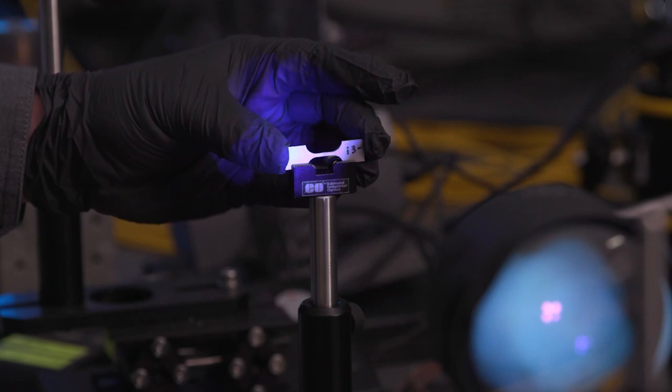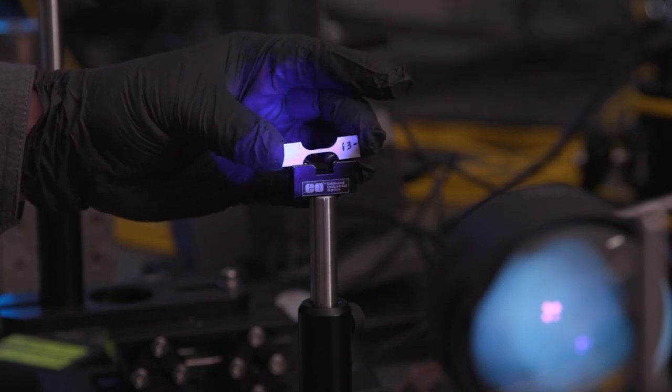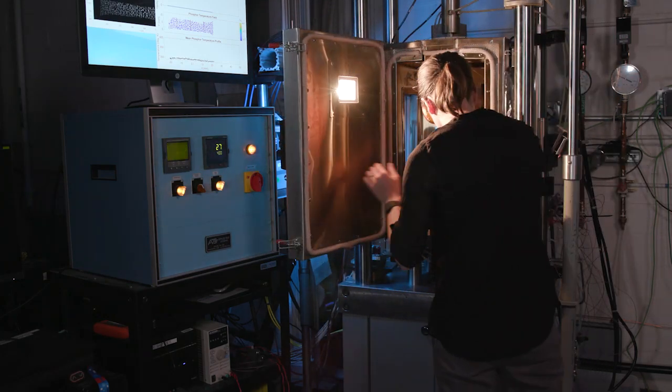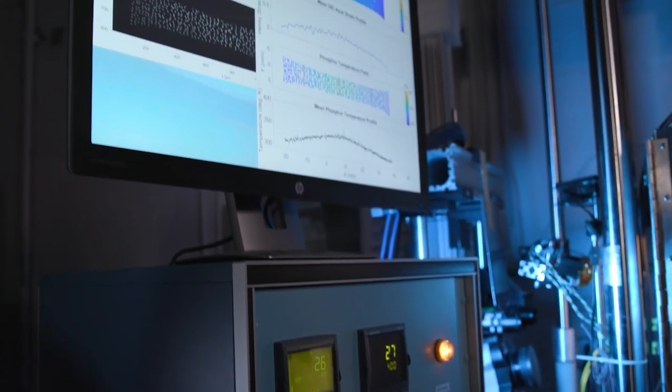As long as we can see enough light coming off of the phosphor material, we can make a measurement. Thermal phosphor digital image correlation has a lot of applications, all the way from research and development, where we just want to understand how a material coupon deforms and heats up as we insult it with mechanical or thermal loads.